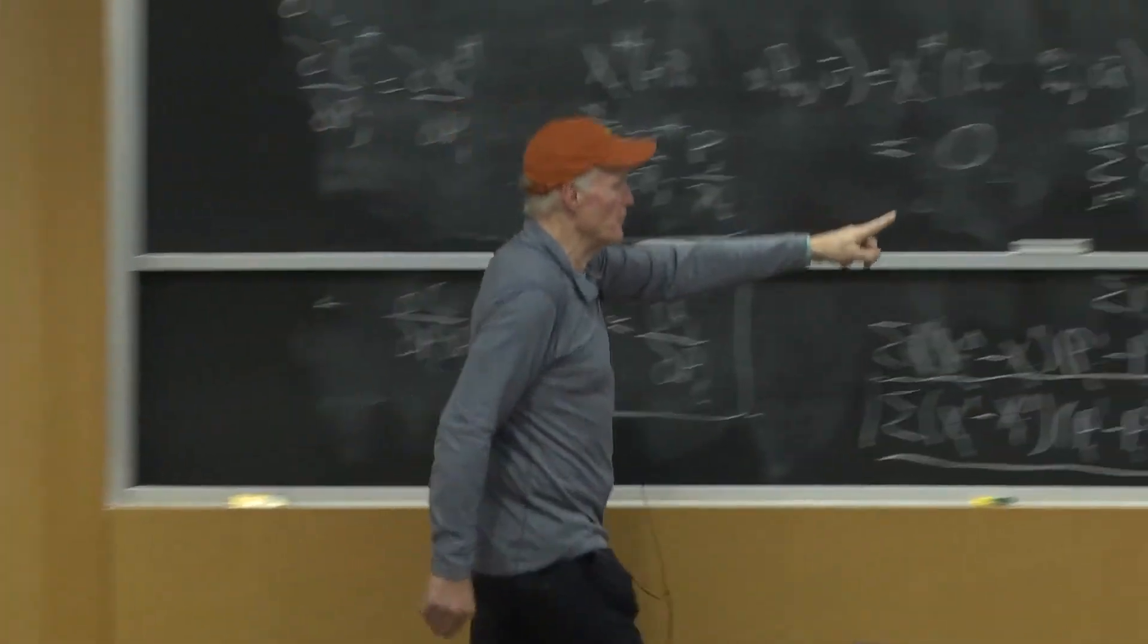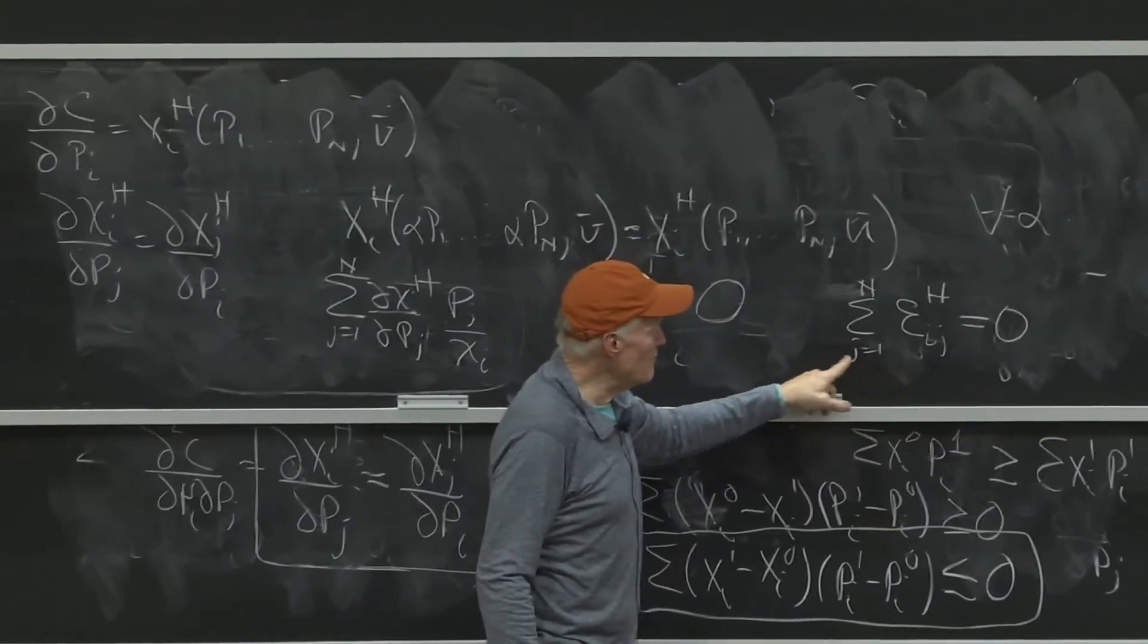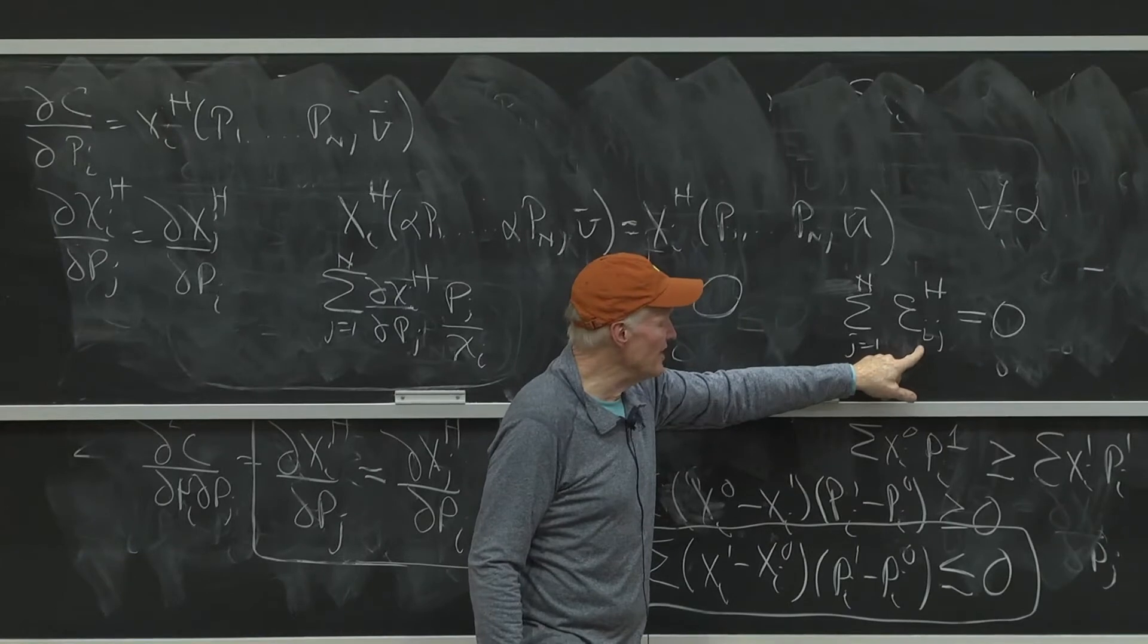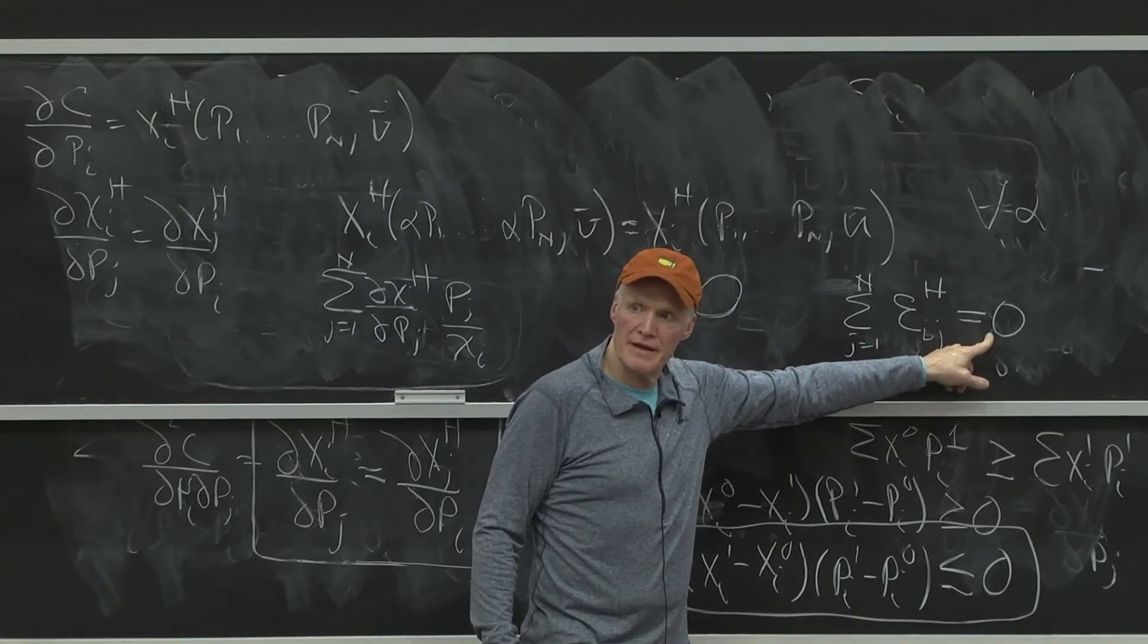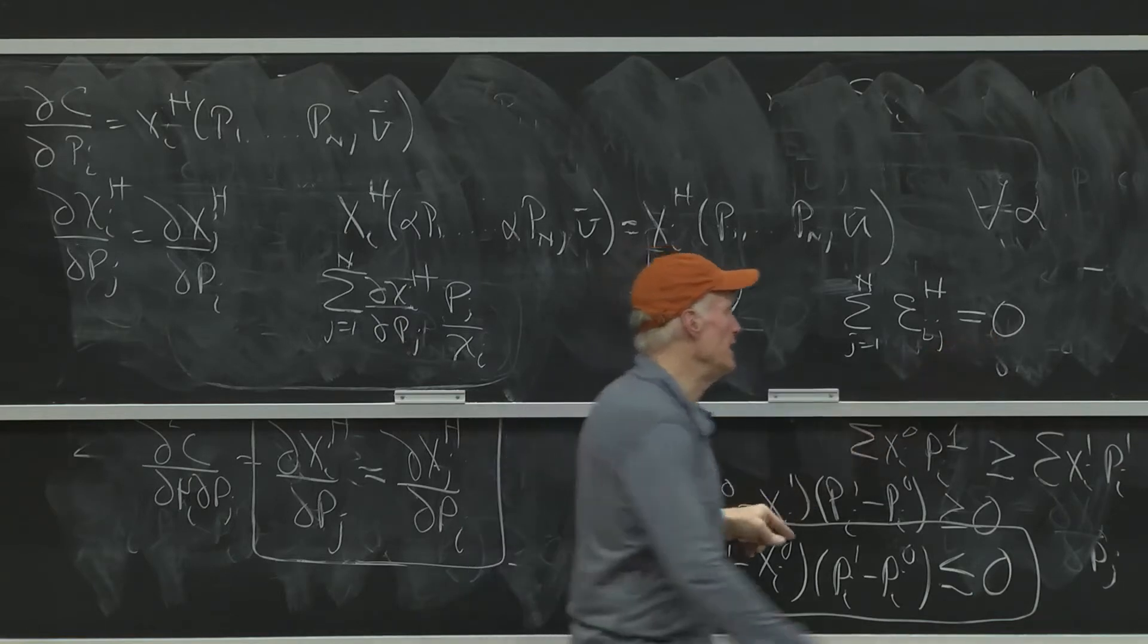This is equation for good i. The sum of all the price elasticities in the Hicksian system has to add up to zero. Everybody agree with that? That's homogeneity.